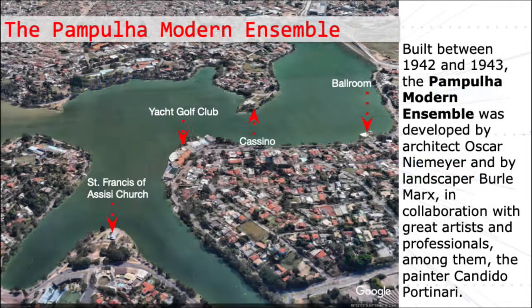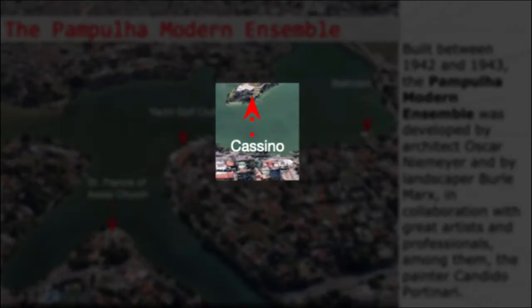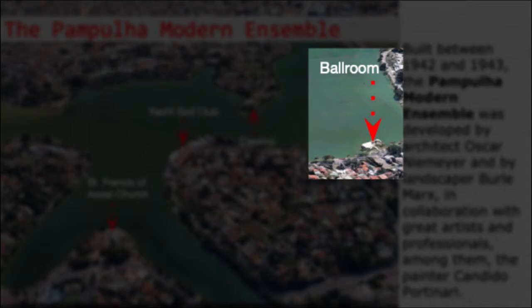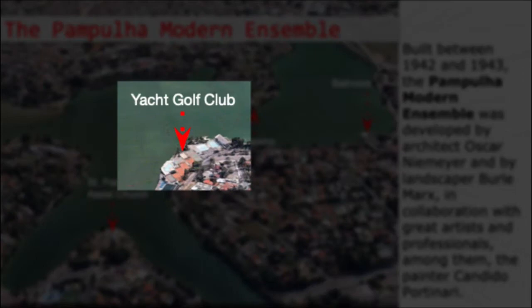The Pampulha Modern Ensemble are real-life models. They were built between 1942 and 1943 by architect Oscar Niemeyer and landscaper Burle Marx, in collaboration with many great artists and professionals, among them the painter Candido Portinari. The Pampulha Modern Ensemble is composed of four buildings: the St. Francis of Assisi Church; the Casino, currently the Pampulha Art Museum; the Ballroom, currently the Center of Reference in Urbanism, Architecture and Design; and the Yacht Golf Club. In this work, we will only address the church and the ballroom.